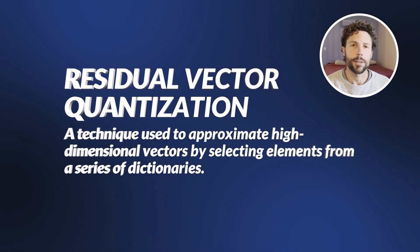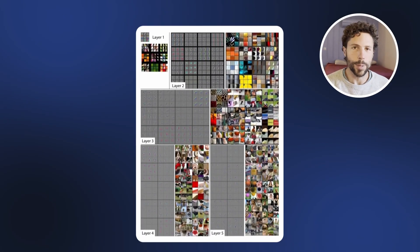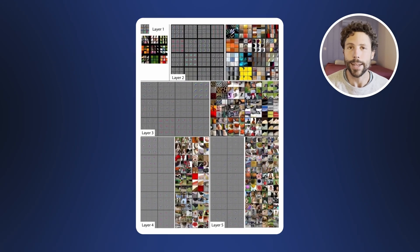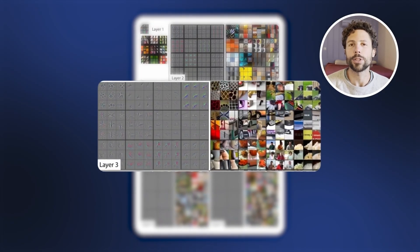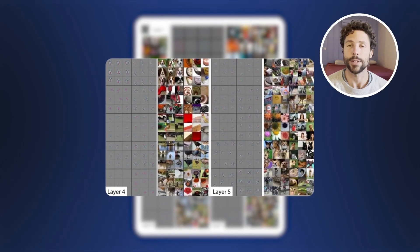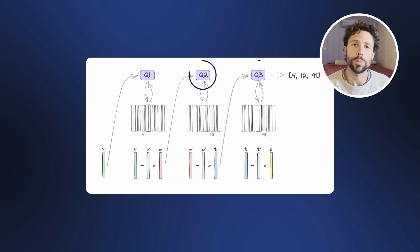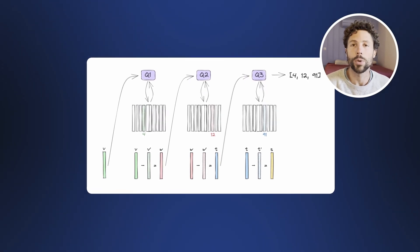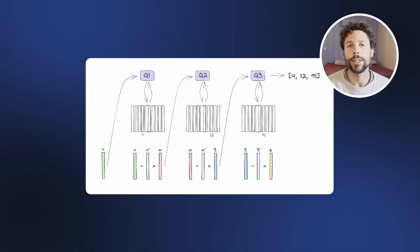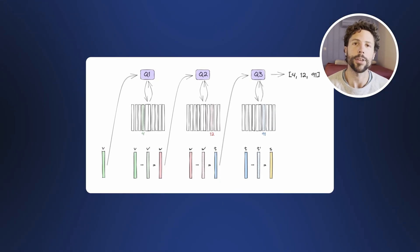RVQ solves this problem with a simple insight: instead of compressing everything at once, why not do it in stages? This might remind you of how deep neural networks process images — early layers detect basic features like edges and colors, middle layers combine these into more complex patterns, and deeper layers recognize high-level features like faces or objects. In RVQ, we replace traditional vector quantization with a multi-layered approach. The first layer quantizes the vectors with moderate resolution, and each subsequent layer processes the residual error from the previous one by taking the vector difference. By splitting the quantization process across multiple layers, the required codebook size can be reduced drastically — just having 5 quantization layers reduces the codebook size from over 1 billion down to just 320. Each layer only needs to handle a portion of the signal, making the whole process much more efficient than trying to capture everything at once with a single codebook.